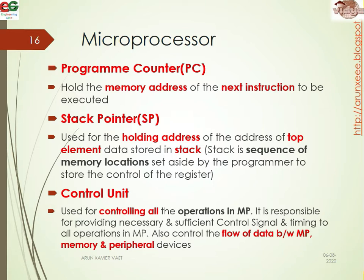When the microprocessor is executing a program, the address of the next instruction to be executed is stored by the program counter. The stack pointer (SP) is used for holding the address of the top element of data stored in the stack. The control unit controls all the operations in the microprocessor and is responsible for providing necessary and sufficient control signals and timing to all other operations, and it controls the data flow between the microprocessor, memory, and the peripheral devices.